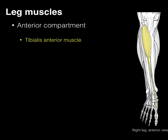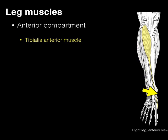The first is our tibialis anterior, which arises from the front of the tibia and part of the interosseous membrane, courses down medially, where it crosses the front of the tibiotalar joint, where it dorsiflexes that joint, and then it inserts on the bottom of the foot by some of those medial tarsals and the first metatarsal. So when that muscle contracts, it lifts the medial part of the foot up and inverts the subtalar joint.